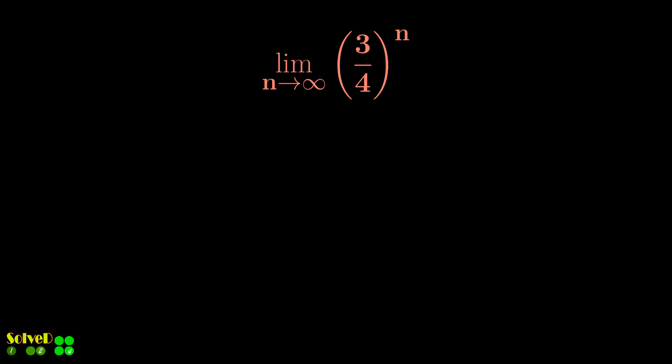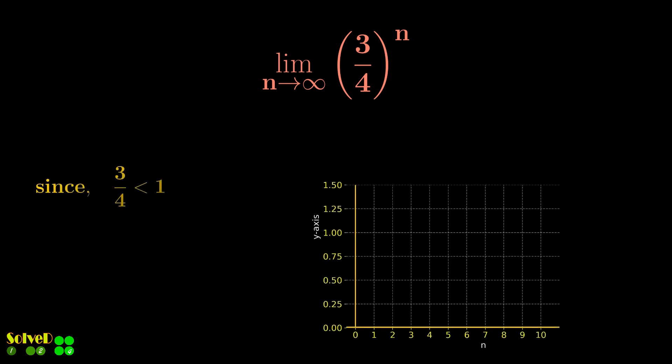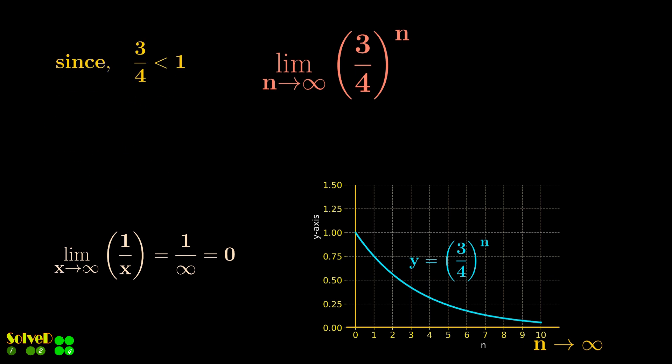Note, 3 by 4 is less than 1. So as the exponent n increases, this function tends to zero. Like 1 by infinity, the graph of this function is shown and you can see that it tends to zero as n increases.